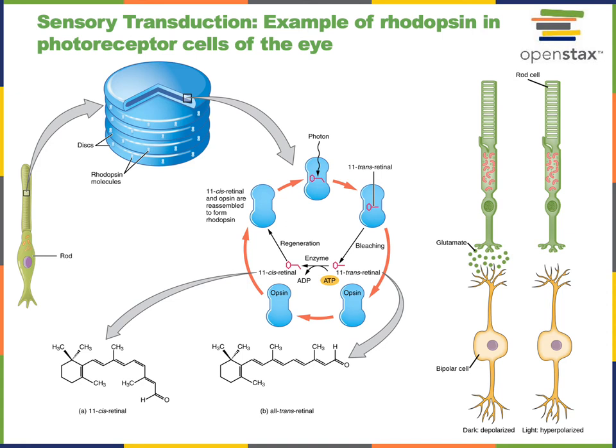Sensory transduction is the process where a stimulus alters the membrane permeability of a sensory receptor, producing a type of graded potential known as a receptor potential. The sensory transduction mechanism for a photoreceptor in the eye, like a rod, involves a light-sensitive G-protein coupled receptor protein known as rhodopsin.